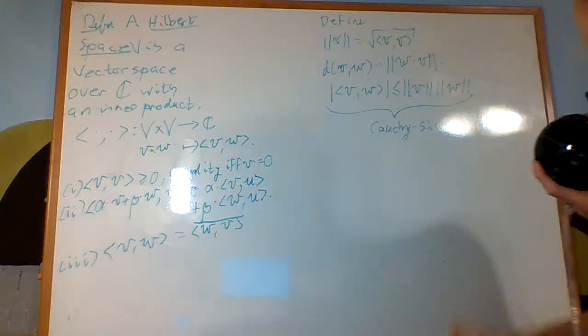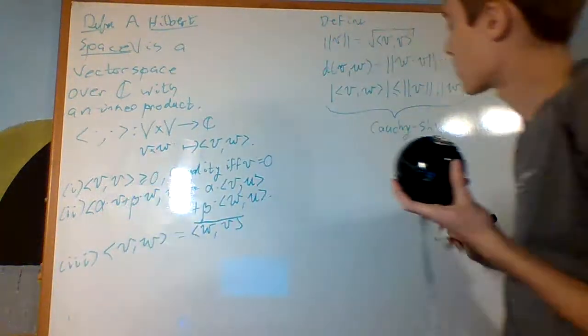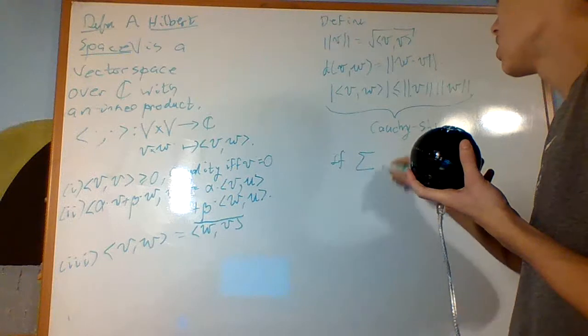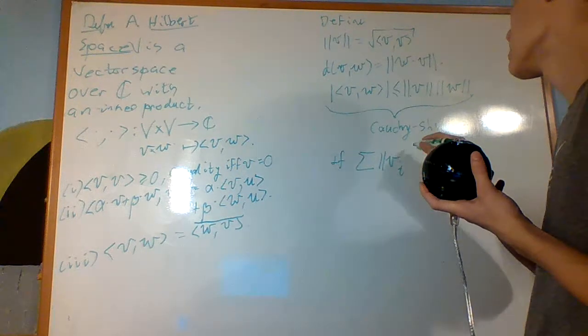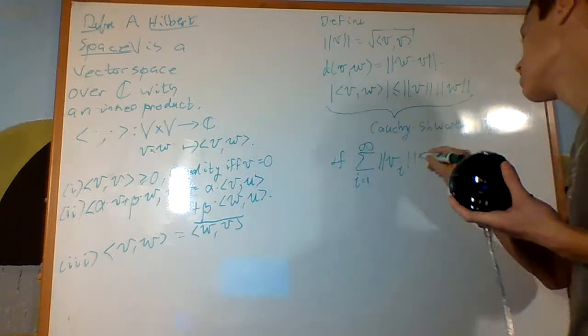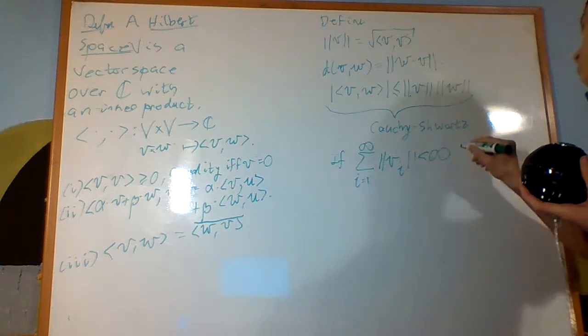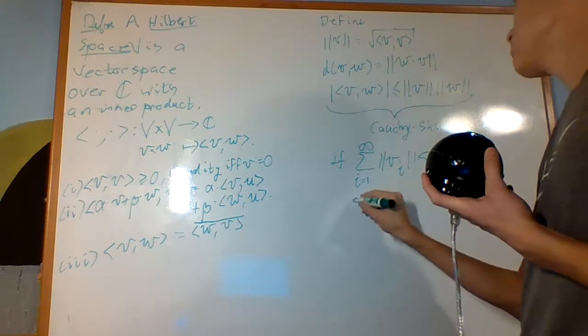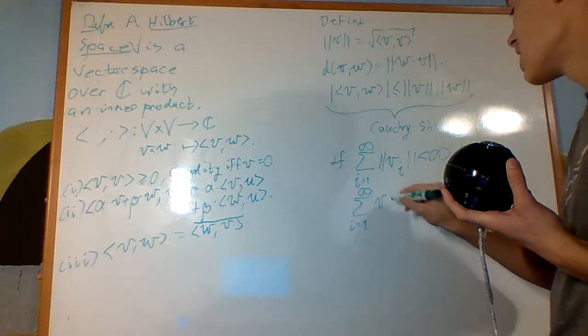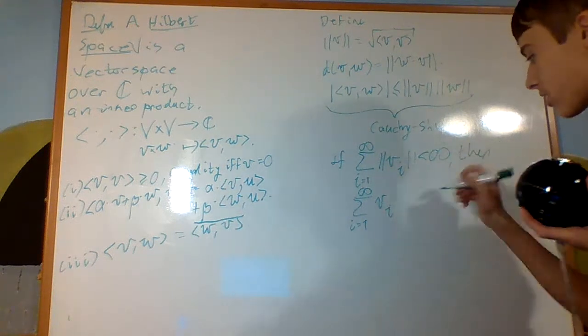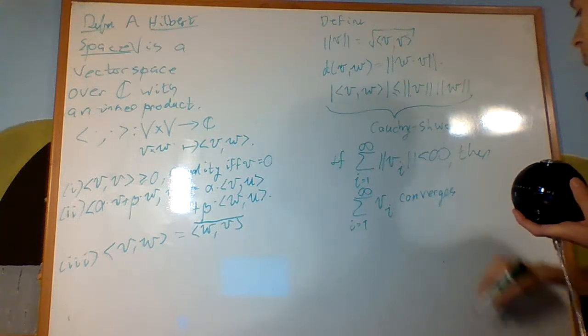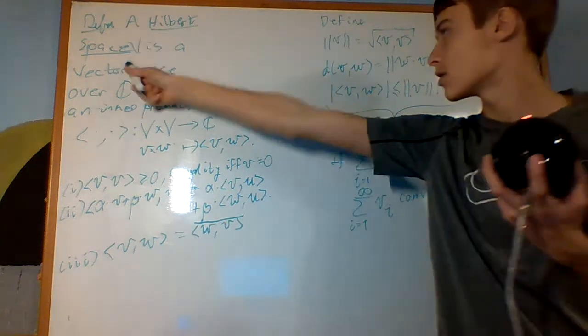And we have one more property: is that if the sum of the norms of VI from I equals one to infinity converges, then the sum from I equals one to infinity of VI without the norm converges to some point in V.